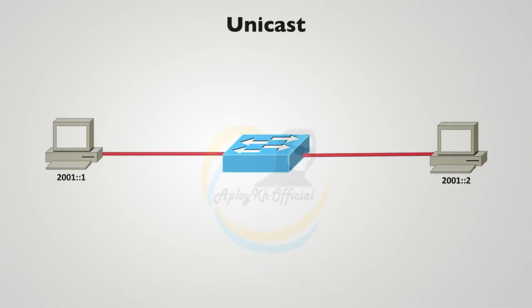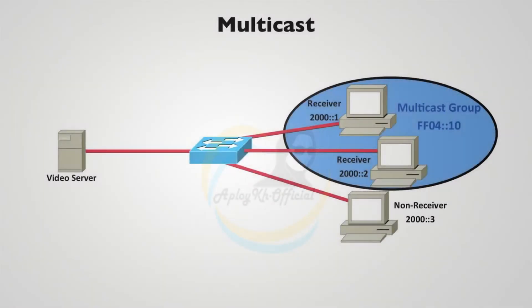It's a little different with IPv6. With IPv6 we still have unicast — one-to-one communication from one host to another. We also still have multicast, where devices wanting to receive multicast traffic join a multicast group, identified by FF as the first two hexadecimal digits. Here a video server sends traffic to a group with two recipients, while a non-receiver that did not join the group does not receive the traffic.